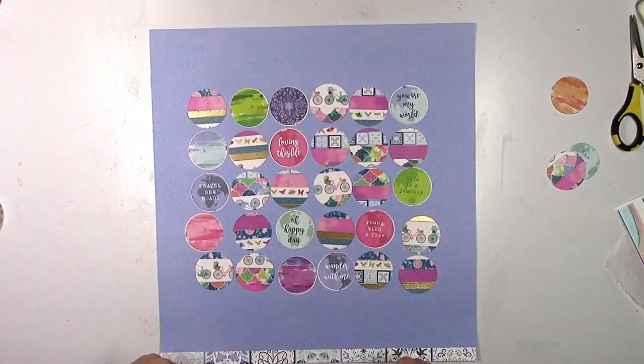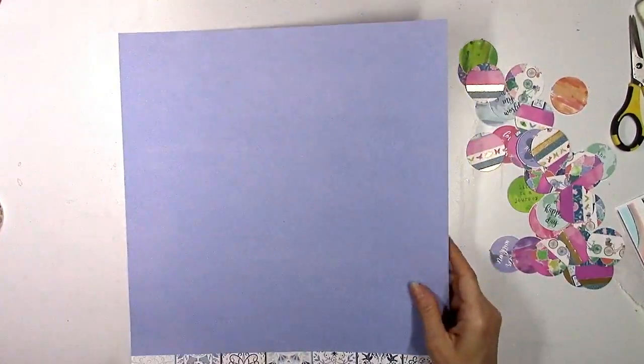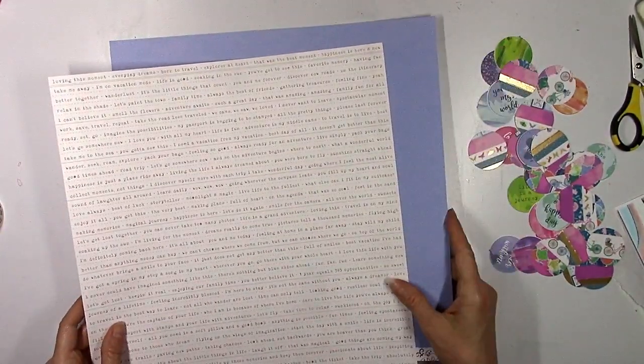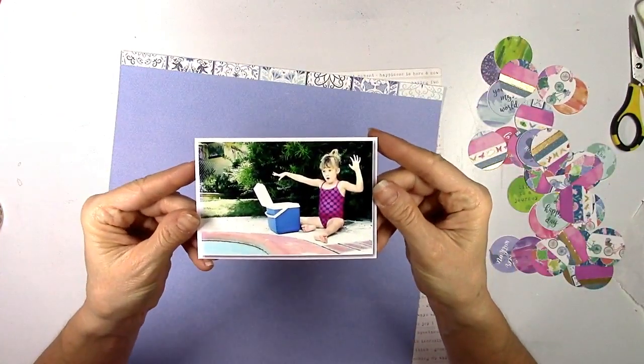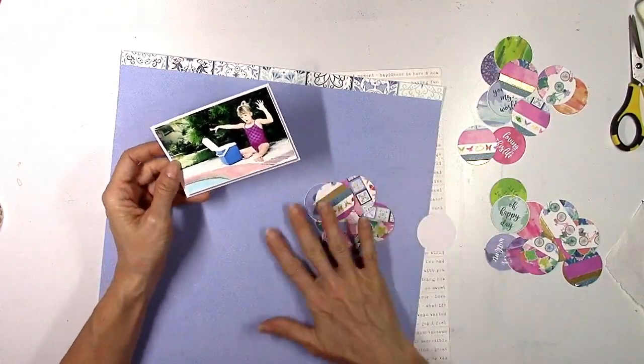Here's everything kind of put together. I just kind of laid all the circles out trying to figure out how I want to arrange them. I'm going to use these two pattern papers here. I didn't want to use white as a background again. I wanted to challenge myself to use a colored background. And here's my photo. You're probably thinking, what is that girl doing?